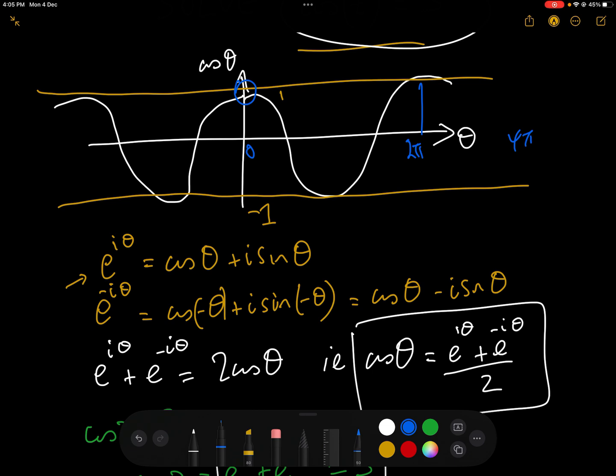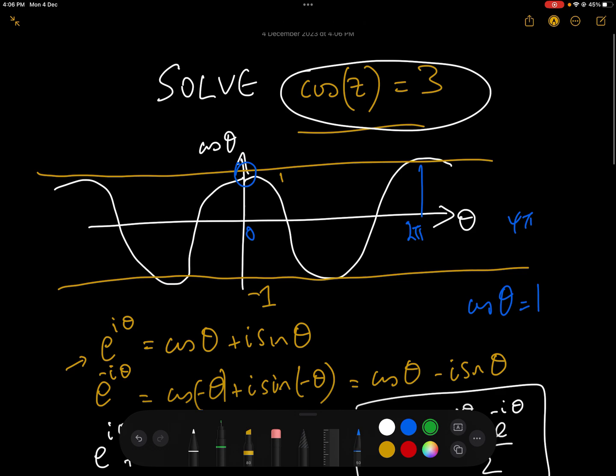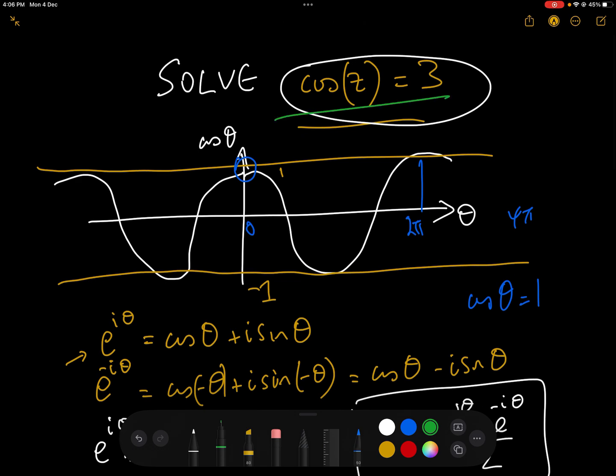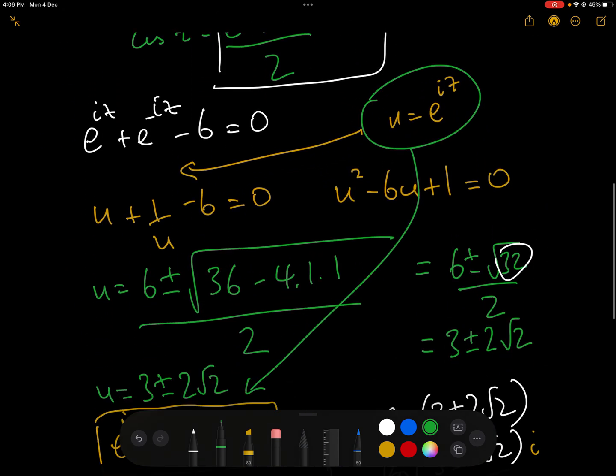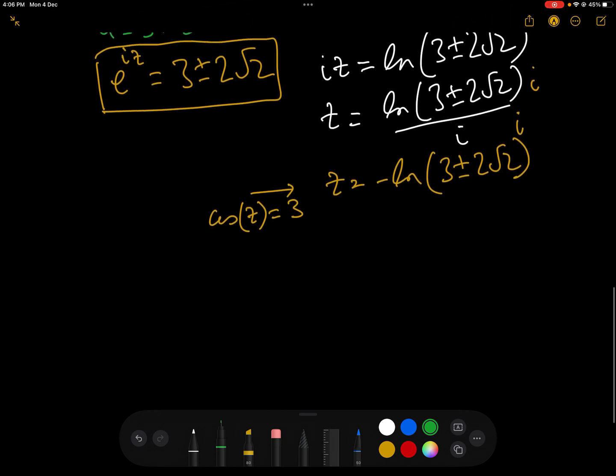There are an infinite number of solutions to the equation cos(θ) = 1. And just in the same way, there are also an infinite number of solutions to cos(z) = 3. So how do we account for the fact that there's an infinite number of solutions?